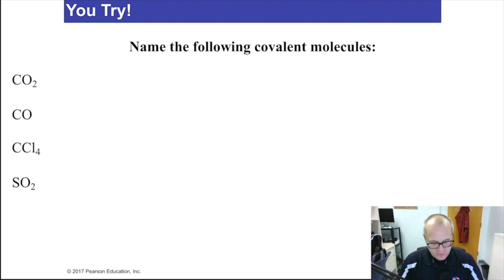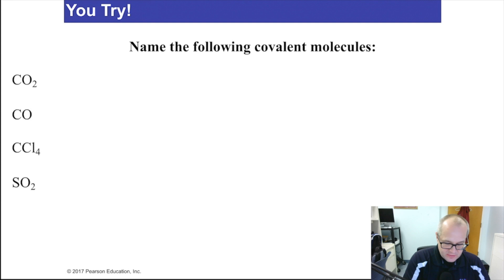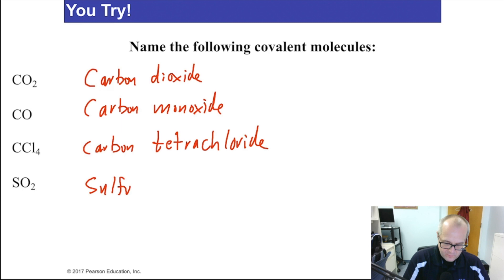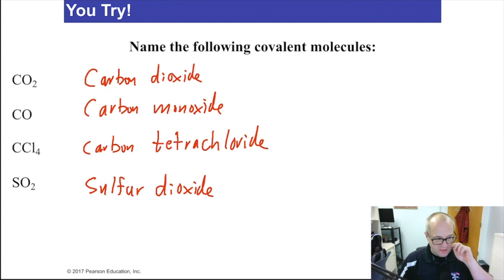Pause the video and try the practice problems — two of them we've already done. The answers are: carbon dioxide, carbon monoxide, carbon tetrachloride, and sulfur dioxide. If you didn't get those right, go back and review the entire section on naming molecular compounds. I'm convinced that most of you, if not all of you, got all of these right — it is fairly simple once you get the hang of it.